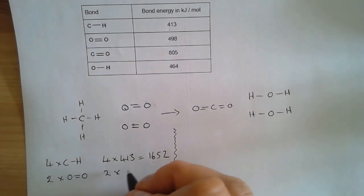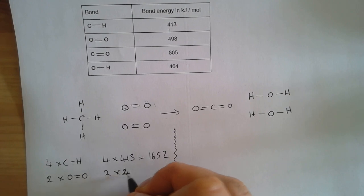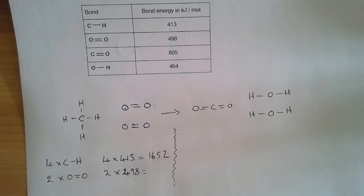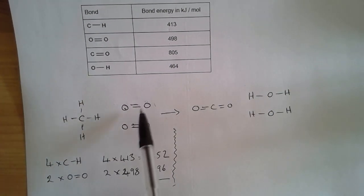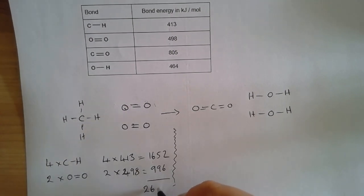And we can do the similar thing for the oxygen. So oxygen to oxygen double bond has a bond energy of 498, so two times 498, that gives us 996. That means the total energy to break all of these bonds, the four carbon to hydrogens and the two oxygen to oxygen double bonds, is 2648 kilojoules per mole.